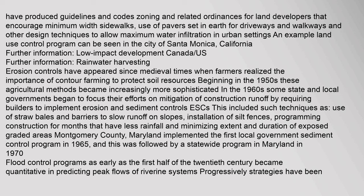Erosion controls have appeared since medieval times when farmers realized the importance of contour farming to protect soil resources. Beginning in the 1950s, these agricultural methods became increasingly more sophisticated. In the 1960s, some state and local governments began to require builders to implement erosion and sediment controls (ESCs), including use of straw bales and barriers to slow runoff on slopes, installation of silt fences, programming construction for months with less rainfall, and minimizing extent and duration of exposed graded areas. Montgomery County, Maryland implemented the first local government sediment control program in 1965.